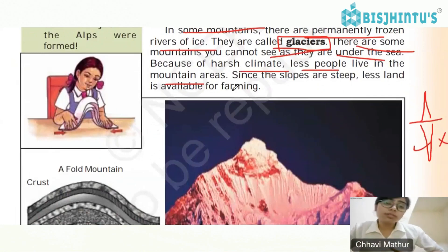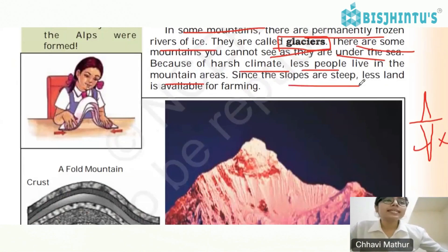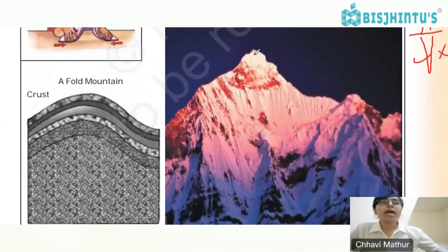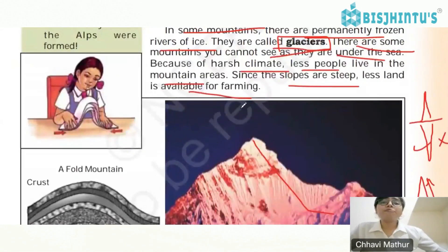Mountainous areas are very difficult because climbing is hard, transportation facilities are not properly available, food resources are difficult to obtain, and climatic conditions are very harsh. Earthquakes, tsunamis, and floods can occur there, which is why mountainous regions have very low population. Since the slopes are steep, less and less land is available for farming.